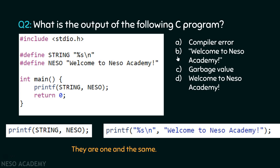If you choose option B as the answer, then you are totally wrong. Whatever is inside these double quotes is only printed — not the double quotes themselves. This is the difference between the two statements: here you can see double quotes, but here there are no double quotes at all. Therefore, the answer is D and not B. Please carefully observe the question — you may answer B, but the small mistake you may make is regarding the double quotes. The answer is D.